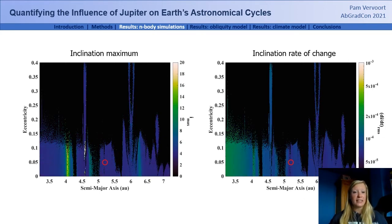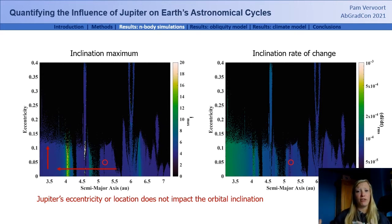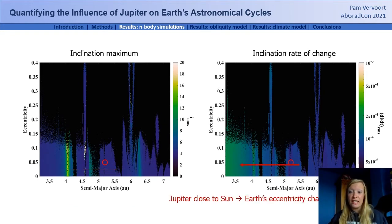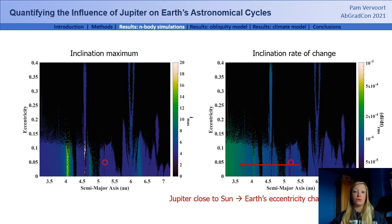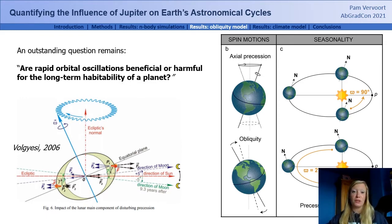We can do exactly the same analysis for the orbital inclination. We find that changing Jupiter's orbit doesn't majorly influence the maximum change in orbital inclination. However, moving Jupiter closer inward does impact the rate of change at which the inclination changes — Jupiter closer inward results in more rapid cycles in the orbital inclination. In terms of habitability, we want to investigate whether more rapid cycles would improve or worsen habitable conditions.